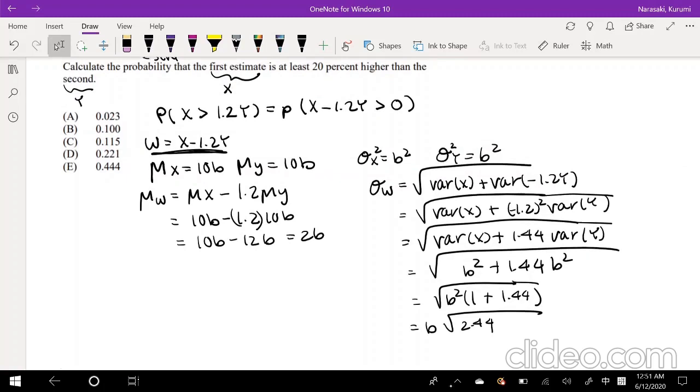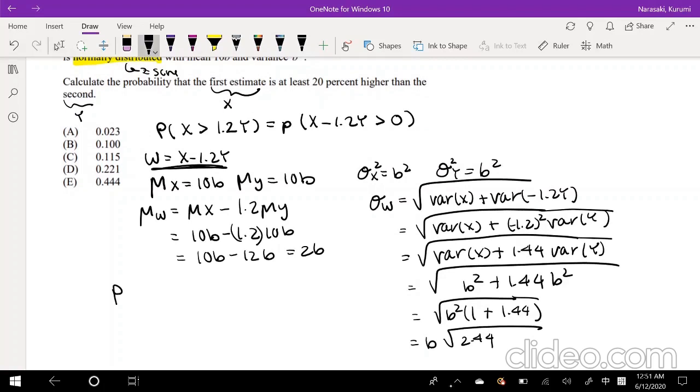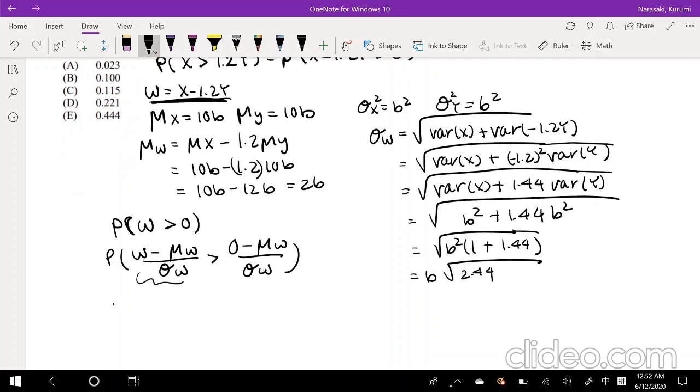It simplifies it a little bit. So now we have all the information we need to find our normal distribution probability. So now because we set this to be W, we're just finding the probability that W is greater than 0. So now we're going to say this is W minus the mean of W over the standard deviation of W is greater than 0 minus the mean of W over the standard deviation of W. And we know that this is just equal to Z, so Z is greater than 0 minus the mean of W, which is negative 2B, over the standard deviation of W, which is B square root of 2.44. The B's cancel out, and now you're left with negative 2 over square root of 2.44.